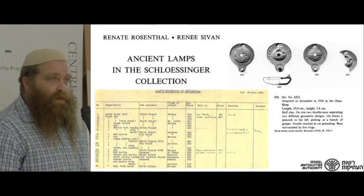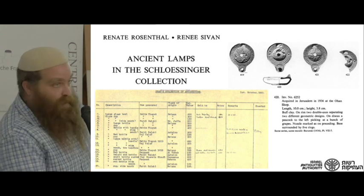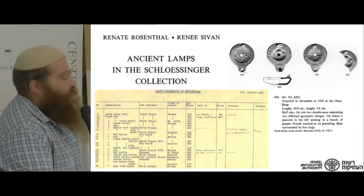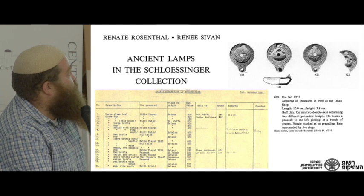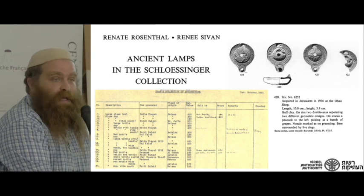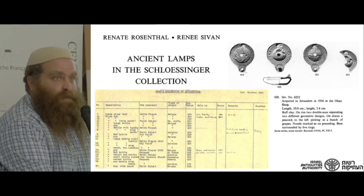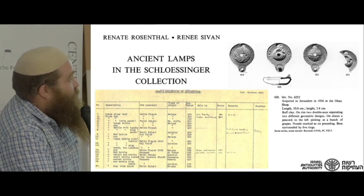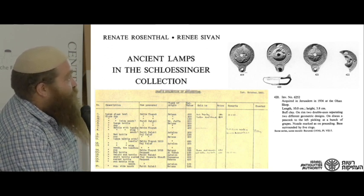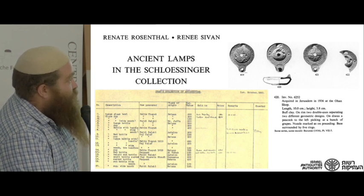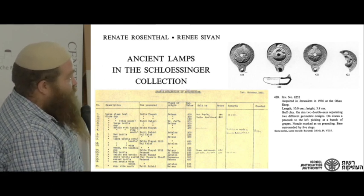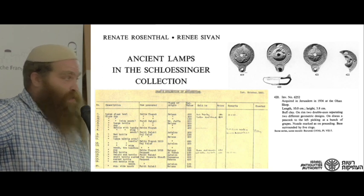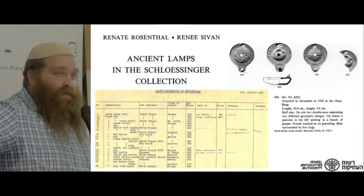There were flat discus lamps in the assemblage. Here is a picture of one of the flat discus lamps included in the publication of the Ancient Lamps of the Schlesinger Collection, now housed in the Hebrew University Ceramics Collection, published in Kedem number 8. In the inventory, lamp number 420, as well as numbers 19, 21, and 22, are stated to have been acquired in 1936 at the Ohan shop — an Armenian antiquities store located at the Jaffa Gate.